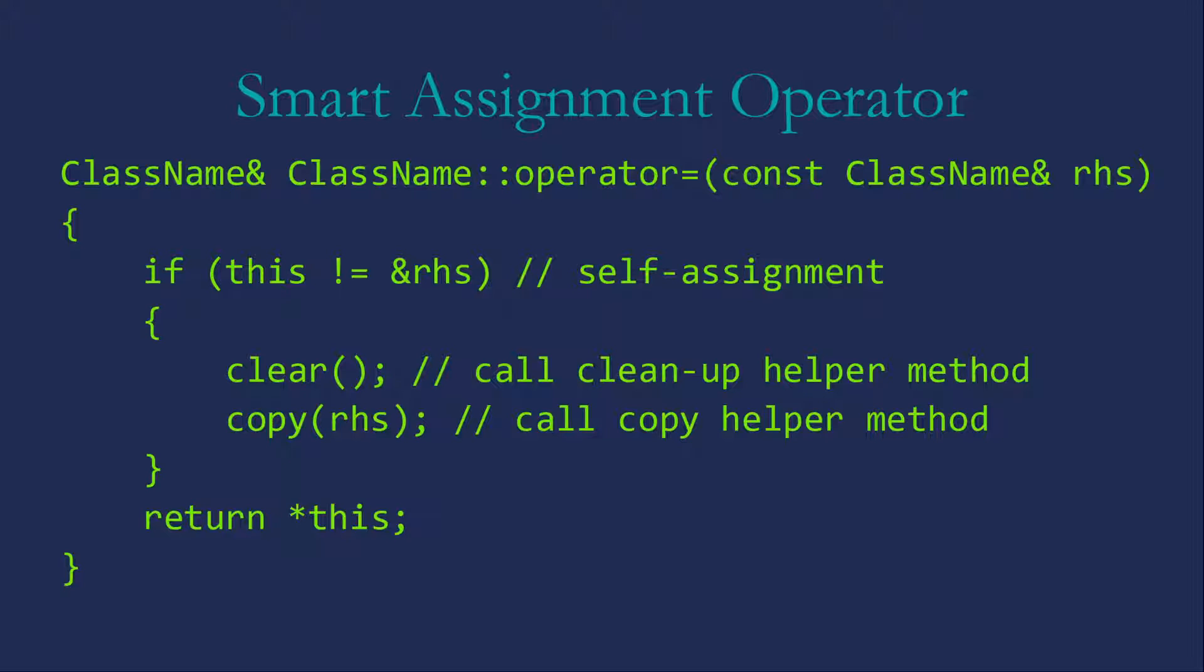So the assignment operator, as I said, returns the value that was assigned. So we're going to be returning a reference to one of our objects. Then we have the operator itself. So our operators are always called operator followed by the symbol that is the operator. Then our parameter is a constant reference to one of our objects, typically called RHS for right-hand side.